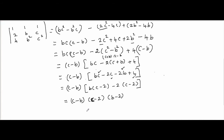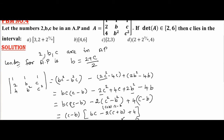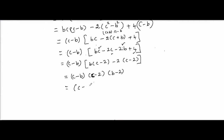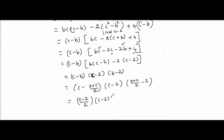Now in this determinant value, we substitute the condition. Since 2, B, C are in AP, B equals (2 + C) / 2. We need C to lie in an interval, so B is expressed in C terms: (C minus B) becomes (C minus 2) / 2, (C minus 2) stays as (C minus 2), and (B minus 2) becomes (C minus 2) / 2. Overall, this simplifies to (1/4)(C minus 2)³.